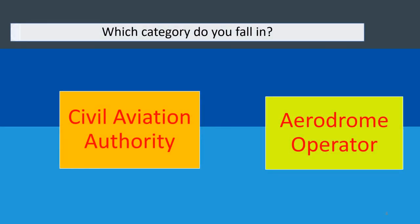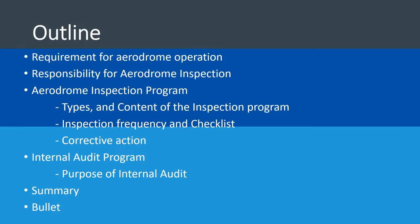To start this week's presentation, which category do you fall in? We've already dealt with the civil aviation authority inspectors, and now we are looking at the aerodrome operator inspectors. Today we'll cover the requirements for aerodrome operations when it comes to airport inspections, the responsibility for aerodrome inspection, the aerodrome inspection program — its type, content, frequency, checklists — and the internal audit program and its purpose.